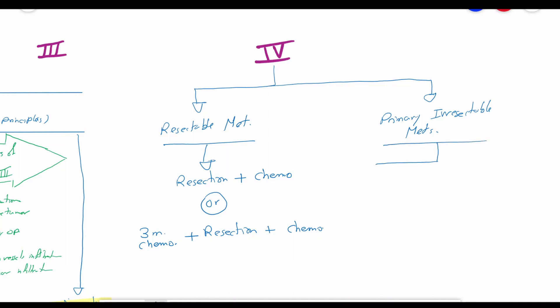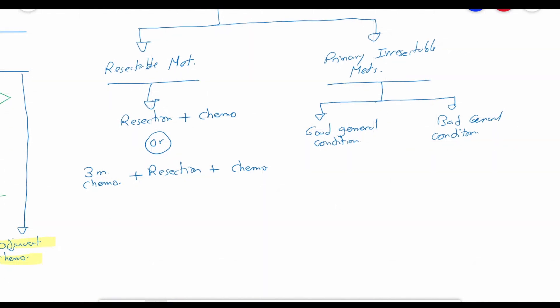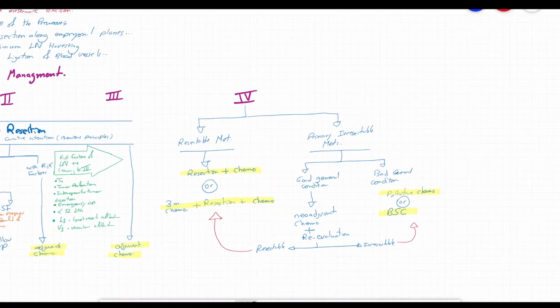On the other hand, primary irresectable metastases does not mean giving up the hope of a potential curative management. In patients with good general condition and willing to undergo extensive therapy, a neoadjuvant chemotherapy as an attempt to downstaging can be given. After evaluation, when the tumor is rendered resectable, the patient passes to the limb of operation and adjuvant chemotherapy. When not, the patient passes to the palliative limb with palliative chemotherapy or best supportive care.